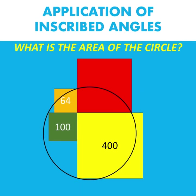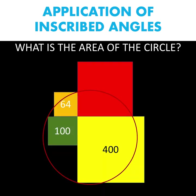Let's talk about application of inscribed angles. What we have here is a circle and four squares. The area of the yellow square is 400 square units, the area of the green square is 100 square units, and the area of the orange square is 64 square units. We do not know what is the area of the red square.